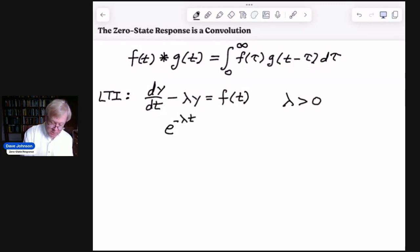And if we multiply both sides of our differential equation by that integrating factor, we'll get e^(-λt) times dy/dt minus λe^(-λt) times y. And on the right side, of course, e^(-λt) times f(t).